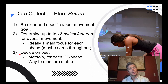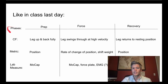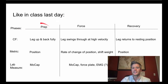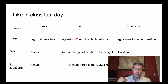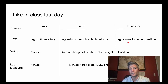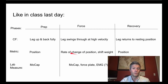Once you have your critical features sorted out, you can then decide on the best metric to measure for each critical feature across different phases. For example, if you're working on a kicking motion, leg position is important in prep; leg moving at high velocity and rate of change with shift of weight in force production; and leg returning to position in recovery. How do you capture position? Motion capture — probably the easiest and best way you know. For rate of change of position and shift of weight, a force plate is really great.